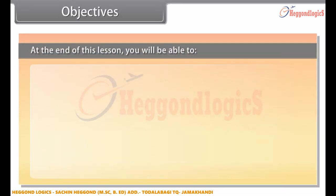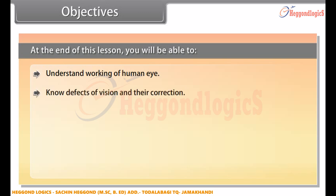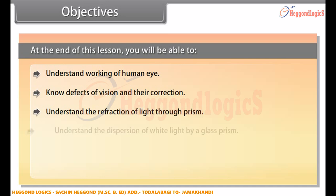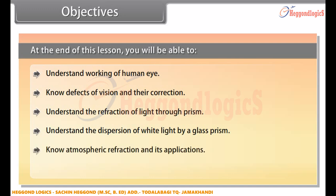At the end of this lesson you will be able to understand the working of the human eye, know defects of vision and their correction, understand the refraction of light through a prism, understand the dispersion of white light by glass prism, know atmospheric refraction and its applications, and know scattering and its applications.